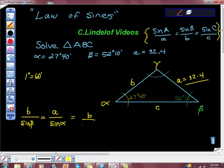So we have B over sine of beta, and we know beta is 52 degrees, 10 minutes, and that is the same as 32.4 over sine of 27 degrees, 40 minutes.